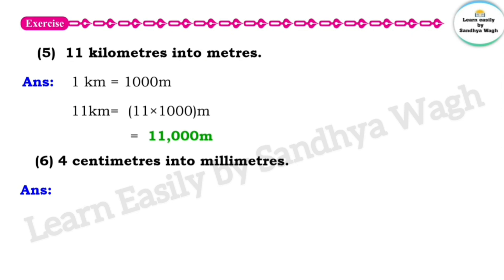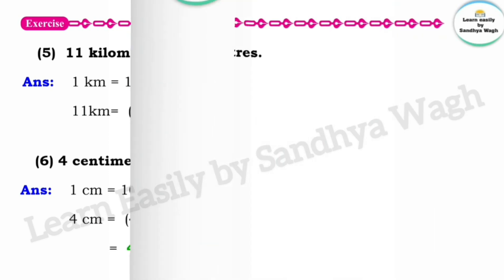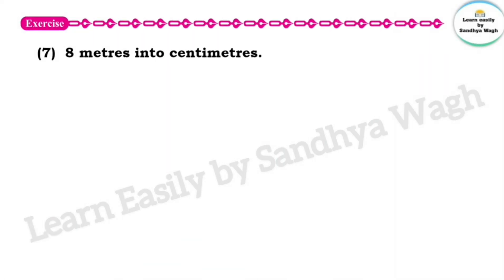Next question: 4 centimeters into millimeters. 1 centimeter is equal to 10 millimeters. So 4 centimeters is equal to 4 multiplied by 10 millimeters, which is 40 millimeters.